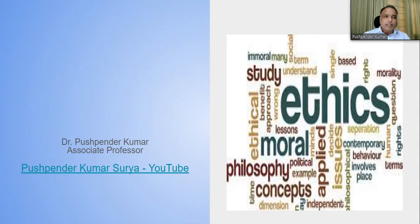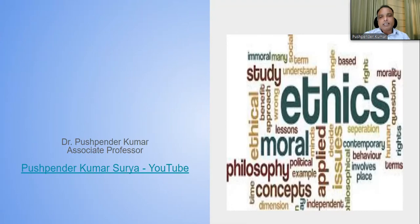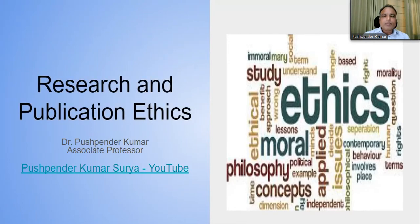Good afternoon everybody. I can see a lot of students with us right now. Thank you everybody for joining. This is a very unique and special kind of course, recommended by the University Grants Commission, and the course title is Research and Publication Ethics — it's a two-credit course. We'll be talking about this in detail. I hope these things are visible to all of you.